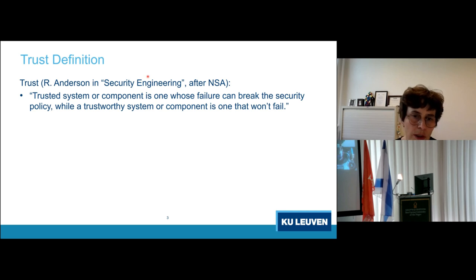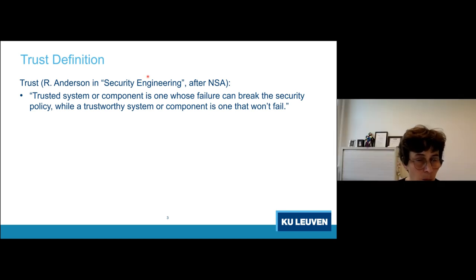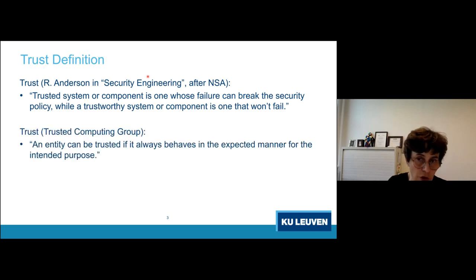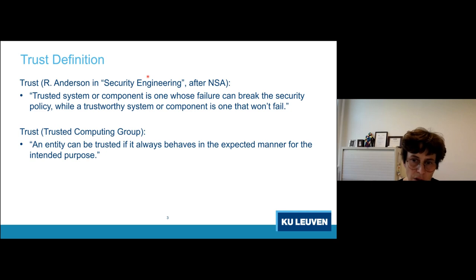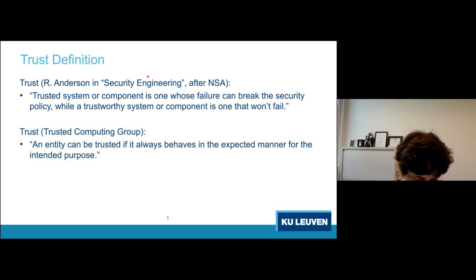Our goal is of course to build trustworthy systems, but for that we often rely on trusted components, and we want to minimize what needs to be trusted. The Trusted Computing Group has an alternative definition: an entity can be trusted if it always behaves in the expected manner for the intended purpose — meaning the component we trust should behave the way we want it to.